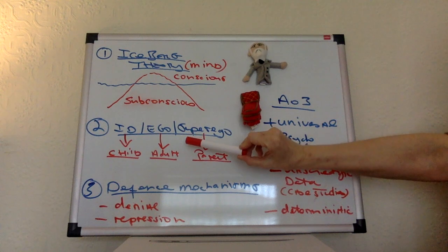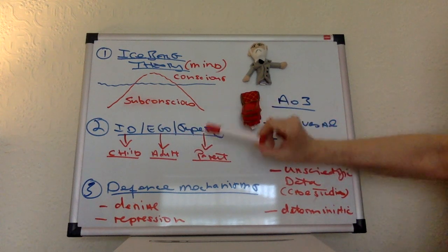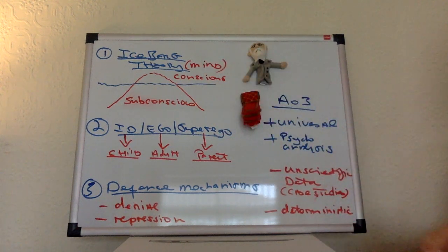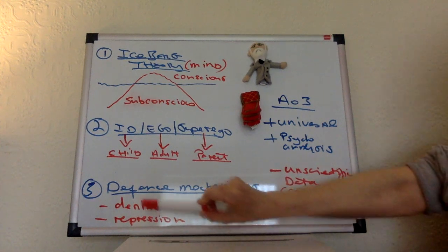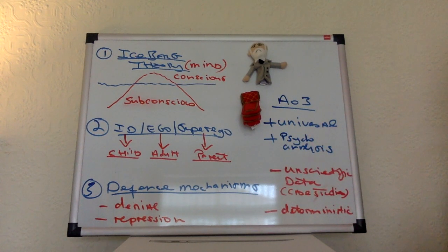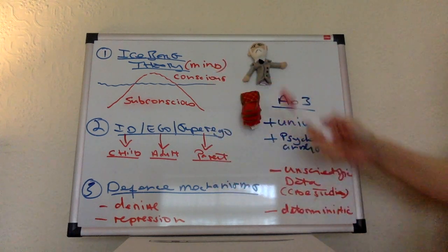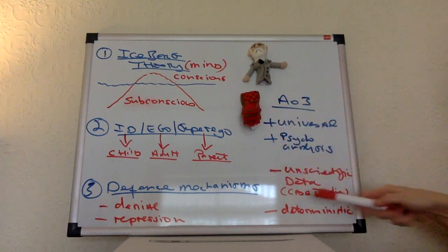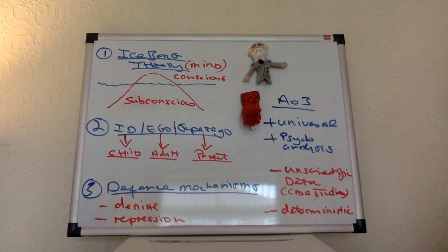Freud's model is a very exciting and interesting model that sometimes students get a bit messed up with, mainly because they tend to overdo description of these AO1 theory points. So if you're going to do a very open-ended 16 marker and that would mean there is no scenario, I suggest that you just use these three points. I suggest you begin with the iceberg theory, then you go on to discuss the id, ego, superego, that's the structure of the mind. And then you go on to these defense mechanisms which link in here.